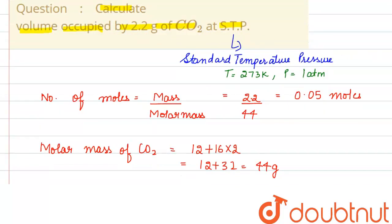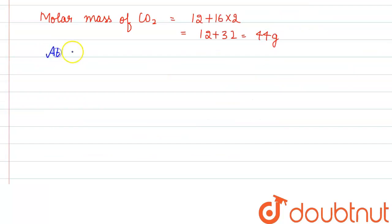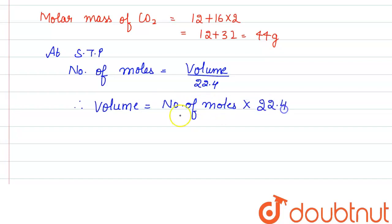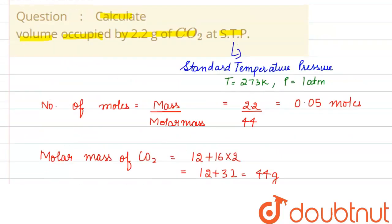Now we need to find the volume occupied by 0.05 moles of CO2 at STP. At STP, the formula is: number of moles = volume divided by 22.4. Therefore, volume = number of moles × 22.4 = 0.05 × 22.4 = 1.12 liters.